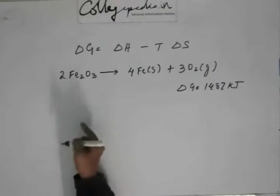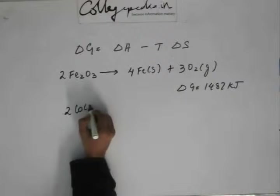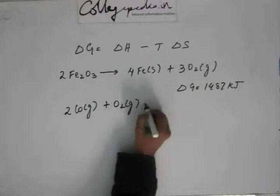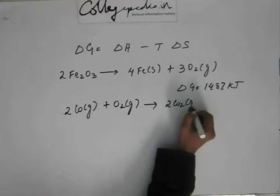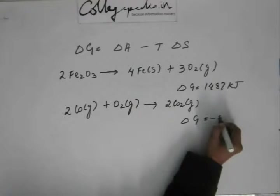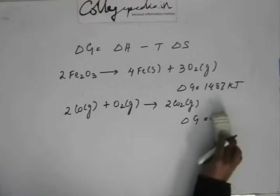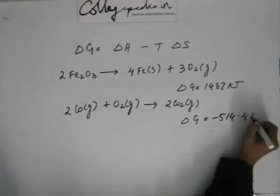Now if you have to couple this reaction with another reaction, which is this. This delta G is equal to minus 514.4 kilojoules.